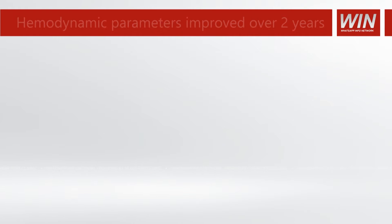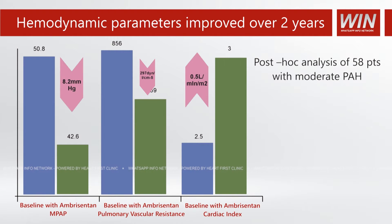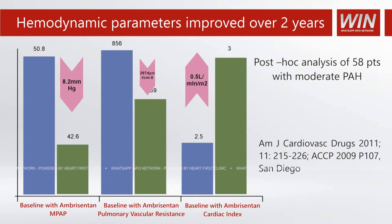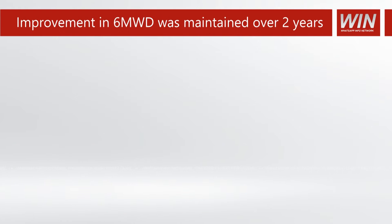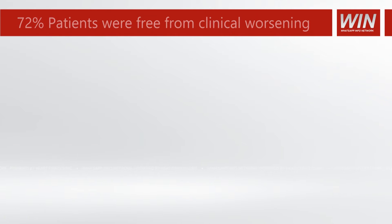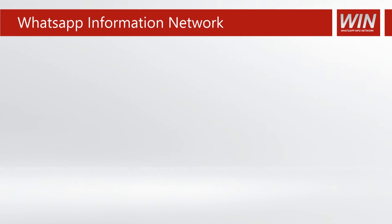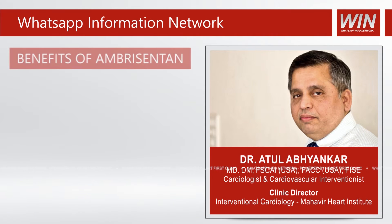Apart from short-term effects, ambrisentan has also shown significant improvements in hemodynamic parameters over two years, with a decrease in mean pulmonary artery pressure, vascular resistance, and improvement in cardiac index. The improvement in six-minute walking distance is maintained over a period of two years in long-term studies, and 72% of patients were free from clinical worsening over two years.